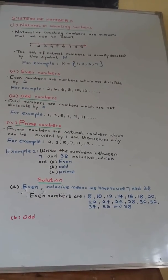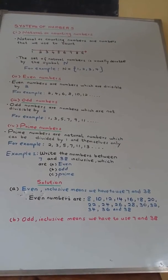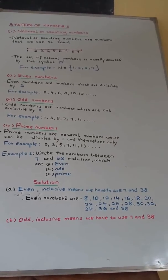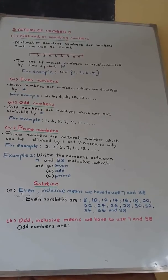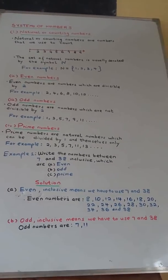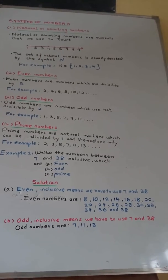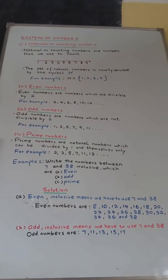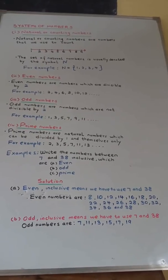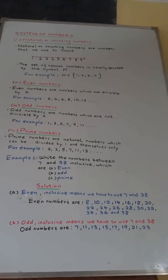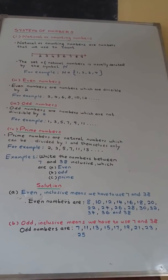(b) Odd. Inclusive means we have to use 7 and 38. Then odd numbers are: 7, 11, 13, 15, 17, 19, 21, 23, 25